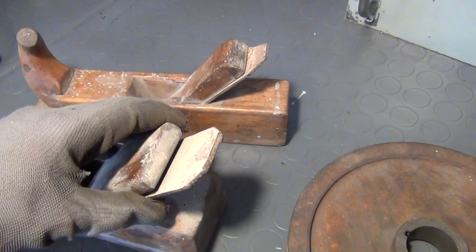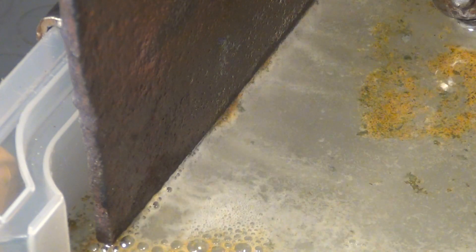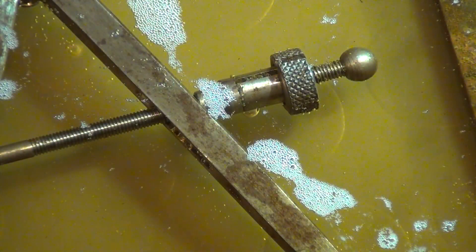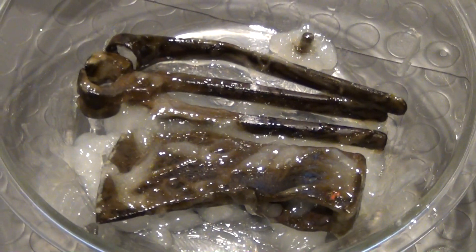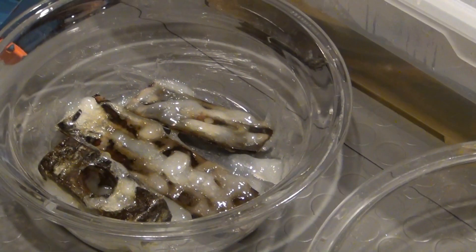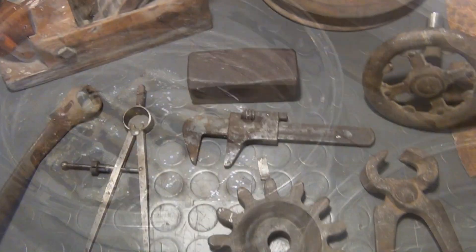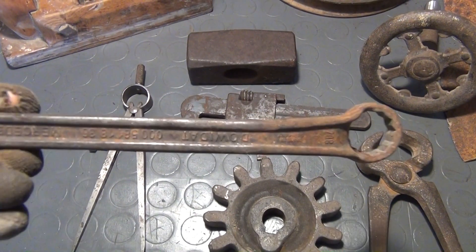What you're going to see here are rust removal experiments with electrolysis, cider vinegar, citric acid, and a commercial product called Rostio. Please watch the video to the end because there will be a grand before and after comparison of all the parts.